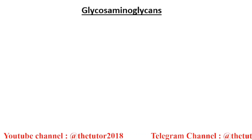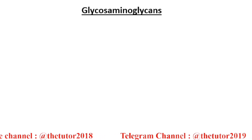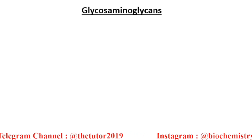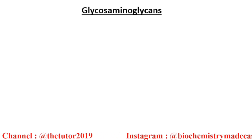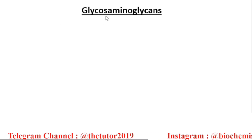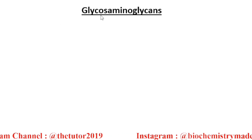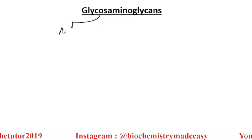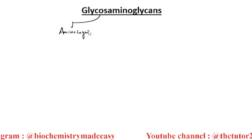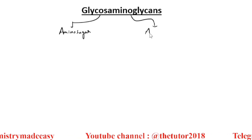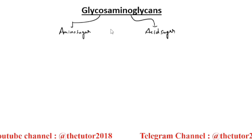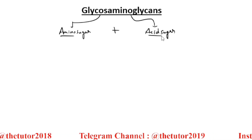Glycosaminoglycans, previously known as mucopolysaccharides, are long unbranched heteropolysaccharide chains composed of a repeating disaccharide unit. The repeating disaccharide includes an amino sugar and an acid sugar.